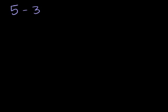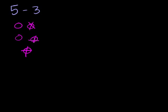Let's review what we know about subtraction. If I say 5 minus 3, what does that mean? Well, there are a couple of ways to think about it. I could have 5 berries — 1, 2, 3, 4, 5. When I say minus 3, or subtracting 3, I'm taking away 3 of these berries. So I took away 1, 2, 3 berries. How many berries do I have left? The only berries left are 1, 2. So I have 2 berries left.